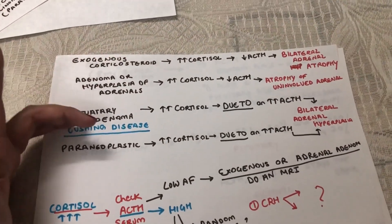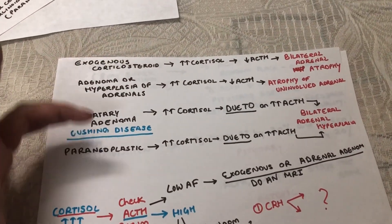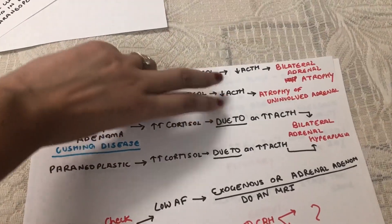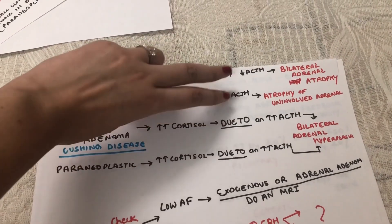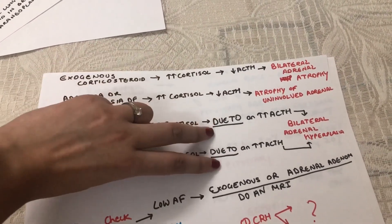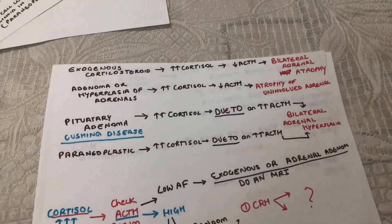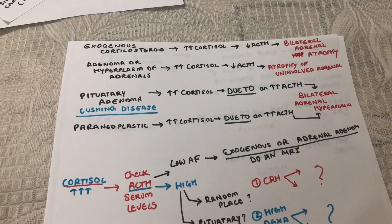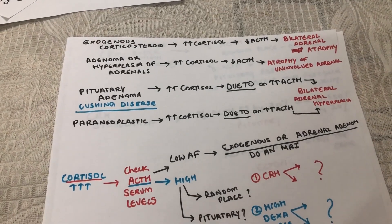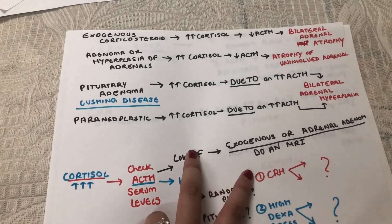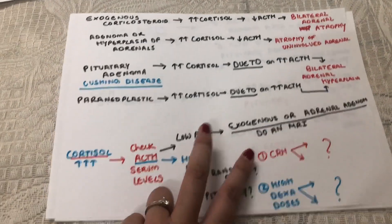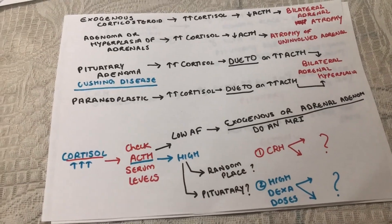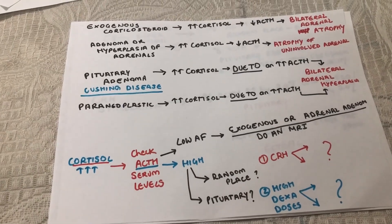Now we know all four causes of Cushing syndrome, but you need to know exactly how to diagnose the specific cause. For that, we have two main tests: the CRH stimulation test and the high-dose dexamethasone test — which is what we're going to talk about next.